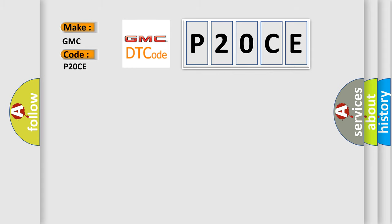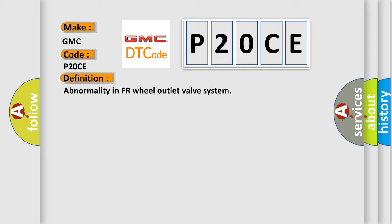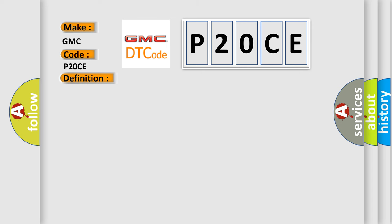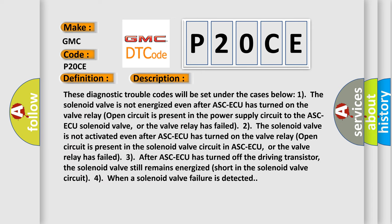The basic definition is: Abnormality in FR wheel outlet valve system. Here is a short description of this DTC code. These diagnostic trouble codes will be set under the following cases. Case 1: The solenoid valve is not energized even after ASCAQ has turned on. A valve relay open circuit is present in the power supply circuit to the ASCAQ solenoid valve, or the valve relay has failed.